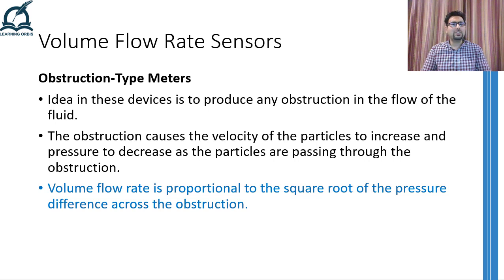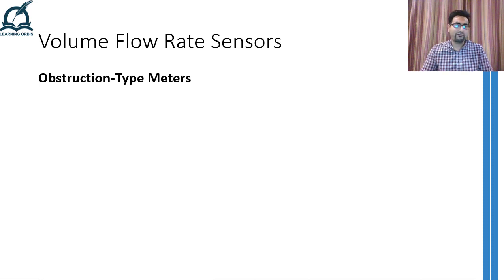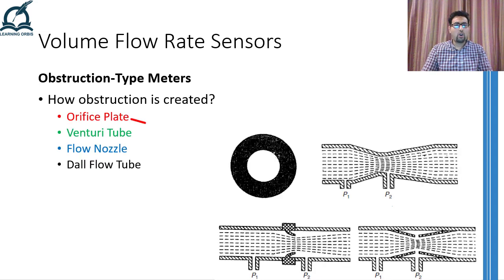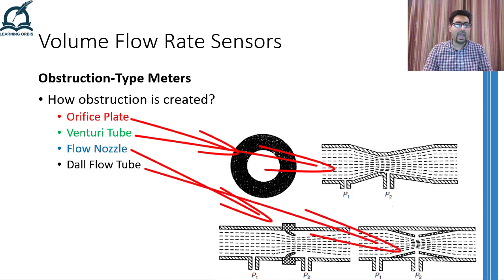The speed is increased by simply decreasing the diameter of the pipe through which the fluid is flowing. Now there are two fundamental questions, answers to which will allow us to measure the volume flow rate. The first question is how obstruction is created in the fluid. Different obstruction meters achieve this reduction in different ways. I'll discuss orifice plate, venturi tube, flow nozzle, and doll flow tube, as these are the most used obstruction-creating devices in the industry.